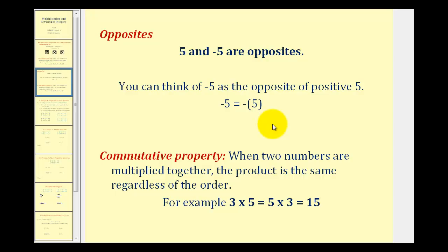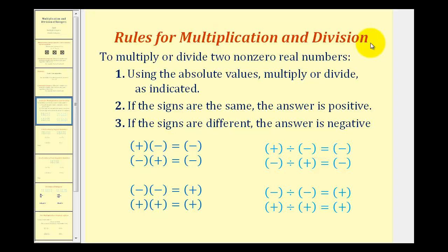So now that we've covered these two topics, let's talk about multiplying and dividing integers. To multiply or divide signed numbers, the formal rules say that when multiplying or dividing two numbers, we use the absolute values and then multiply or divide. If the signs are the same, the answer is positive; if the signs are different, the answer is negative.